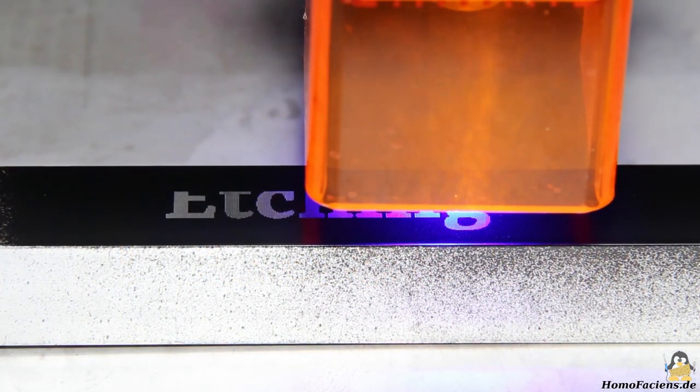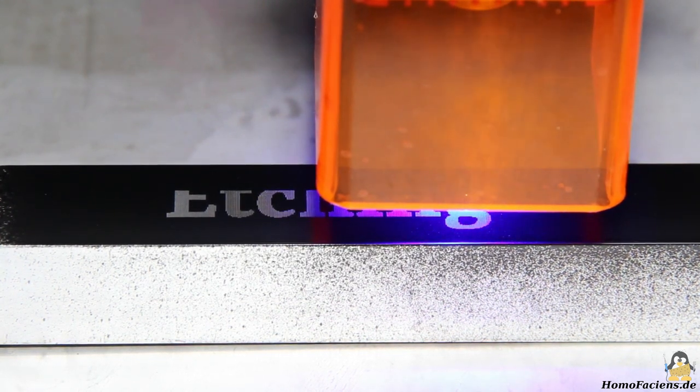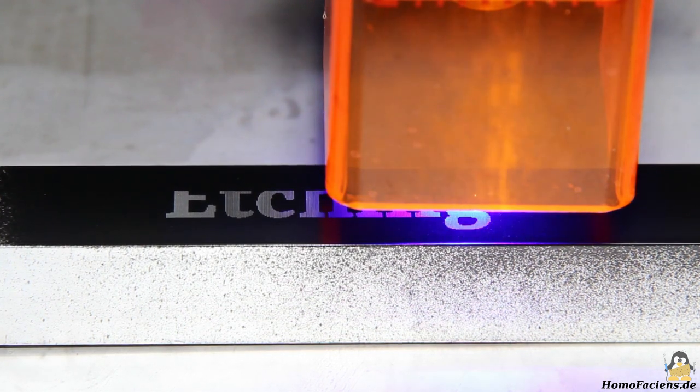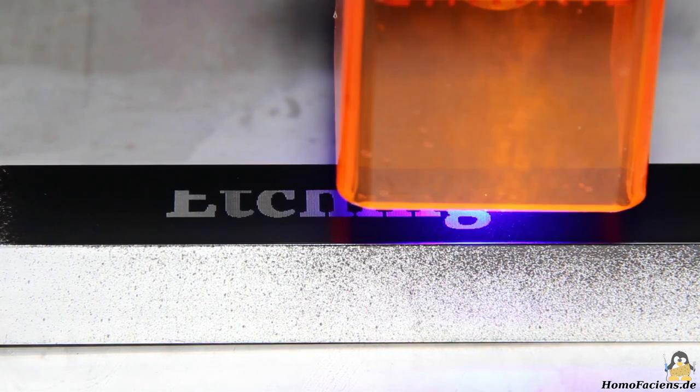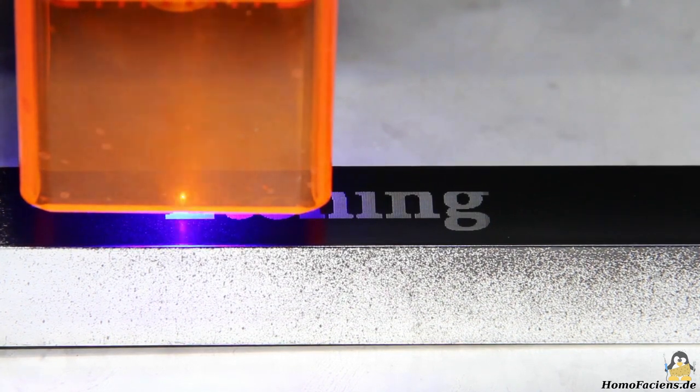Metal surfaces can be machined indirectly with the laser engraver. Here I have sprayed a layer of black paint on a piece of aluminum square tube, which is now removed with the laser. Aluminum is a good heat conductor so that a high burn time is needed to vaporize the paint.